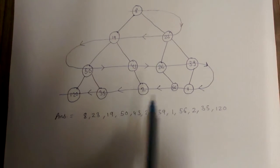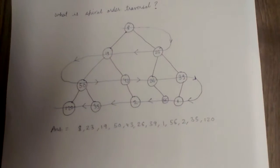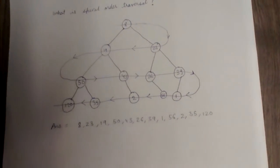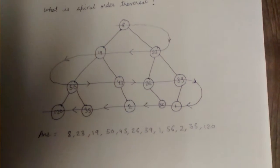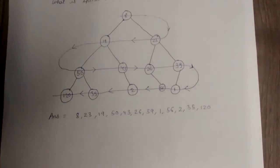1, 56, 2, 35, 120. Okay, so this necessarily need not be a binary search tree. It can be any general binary tree.